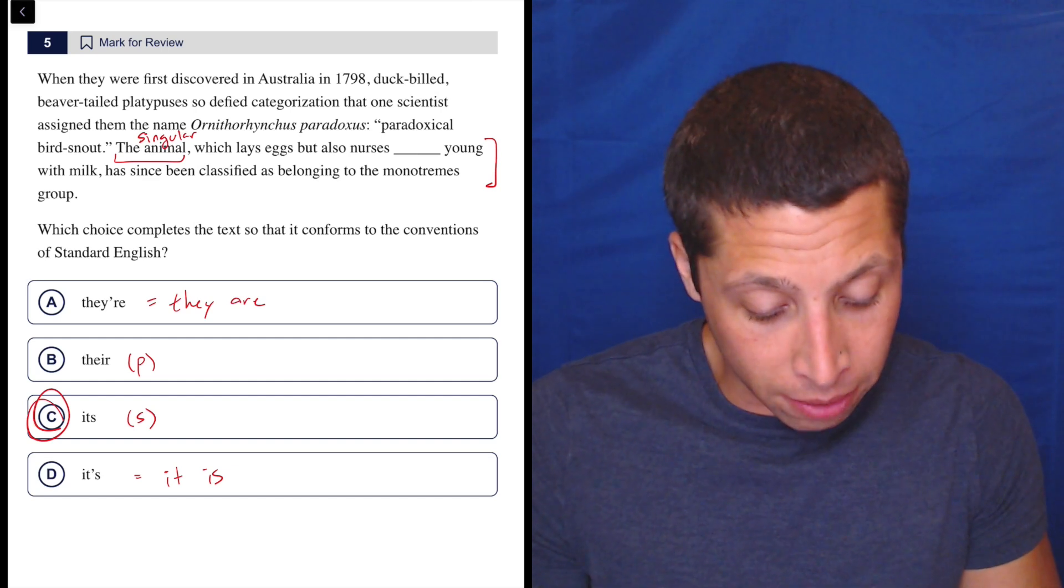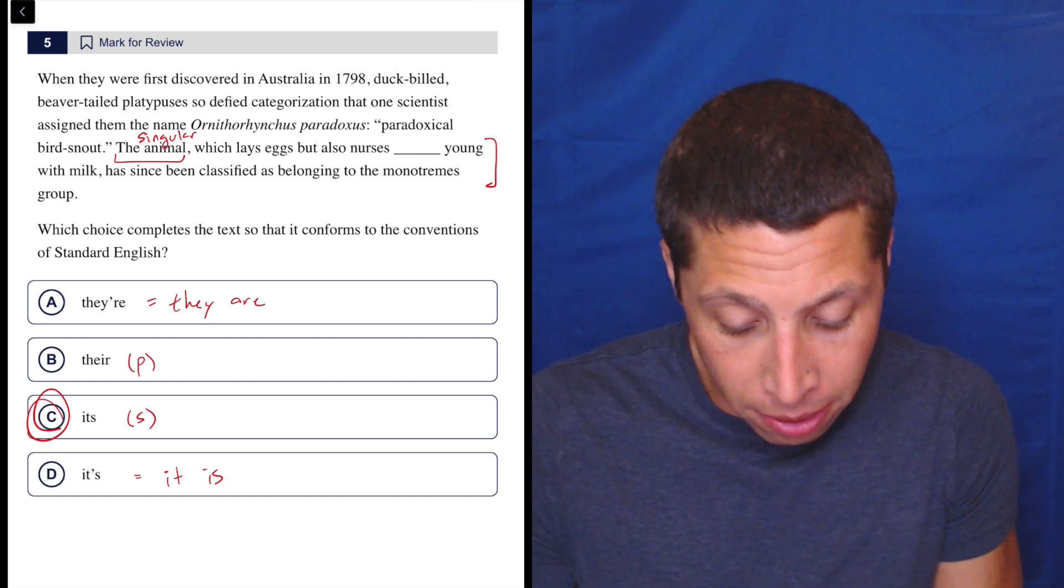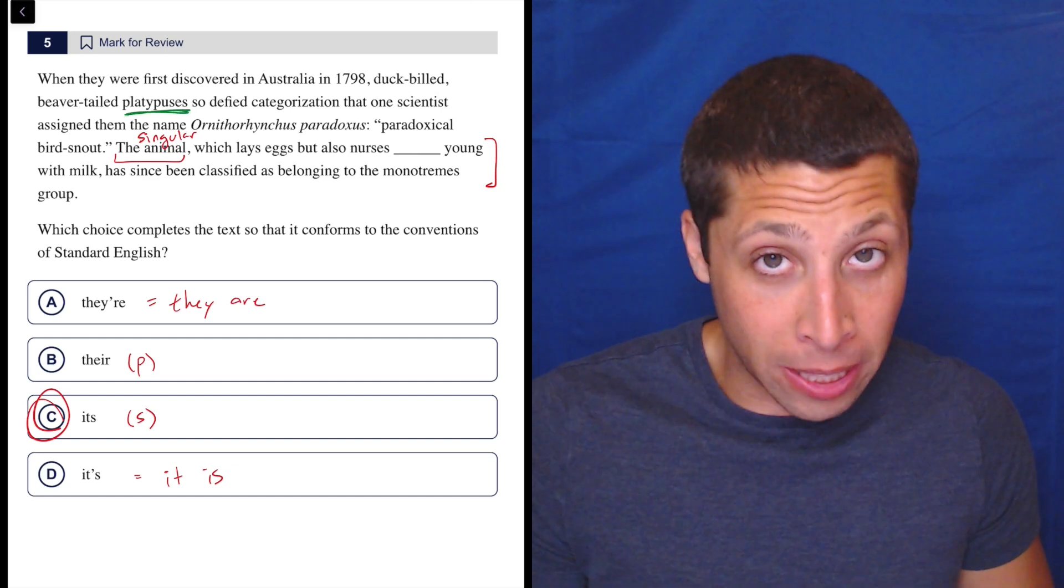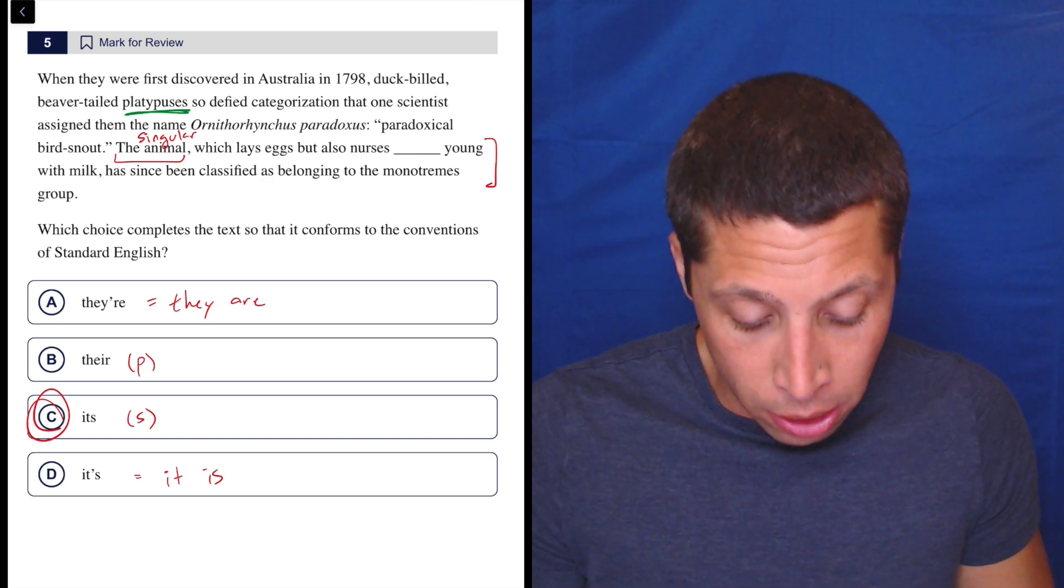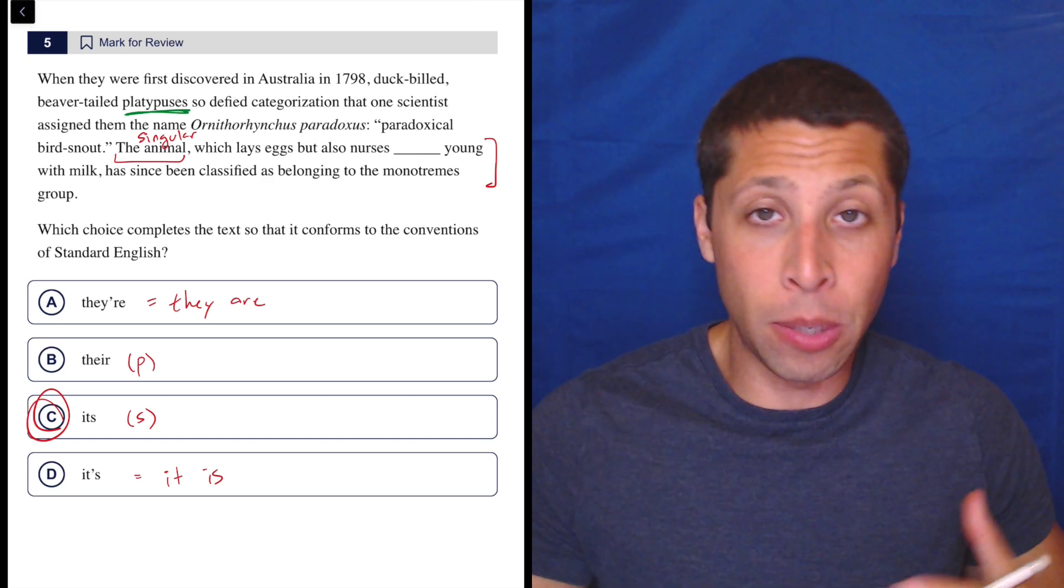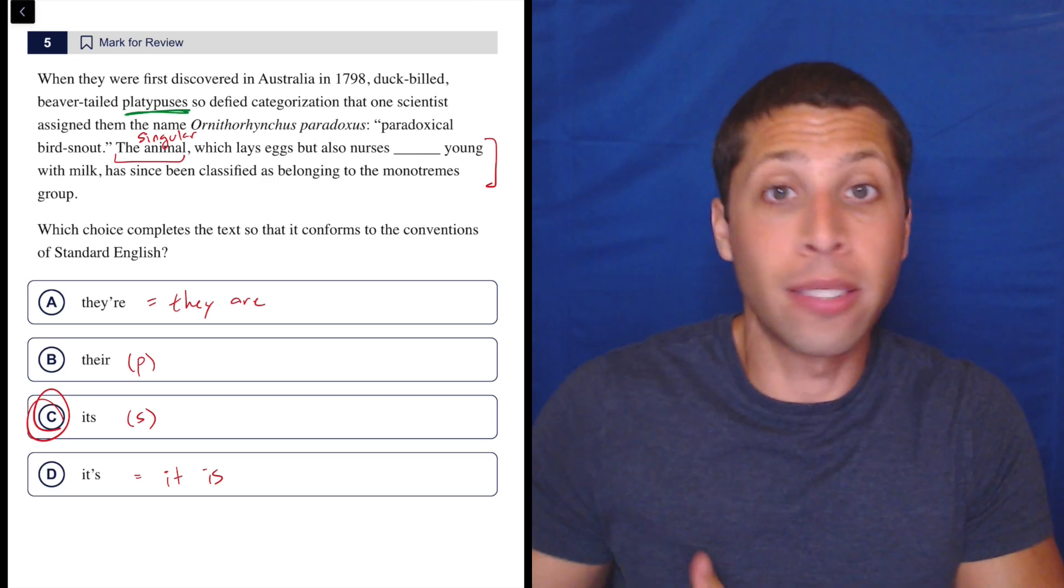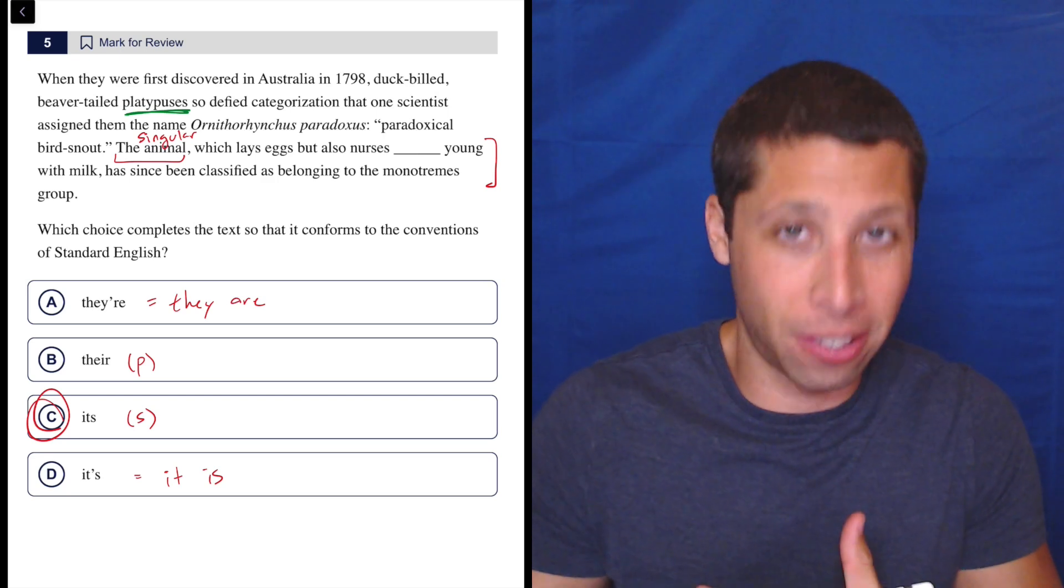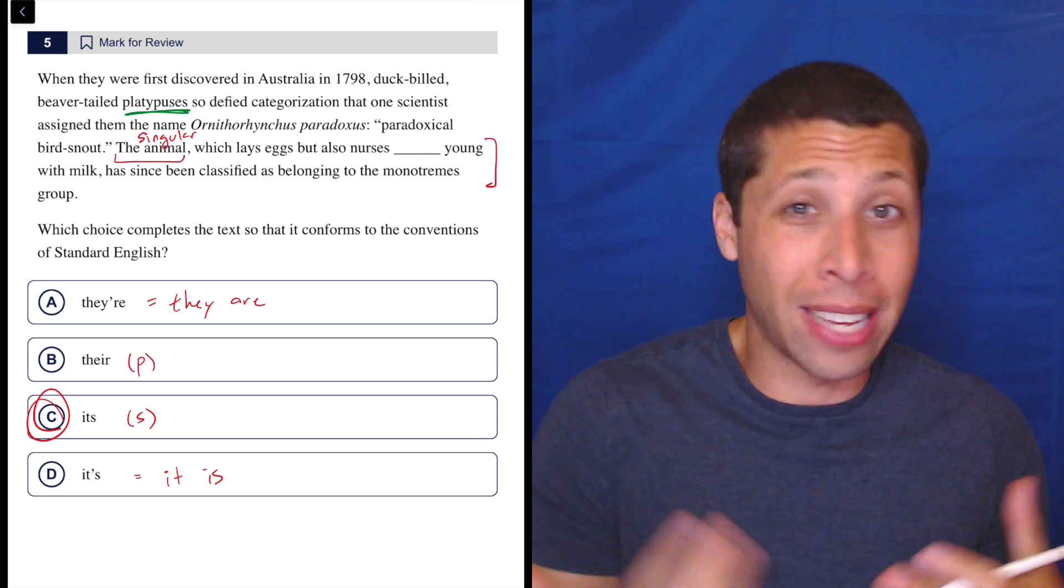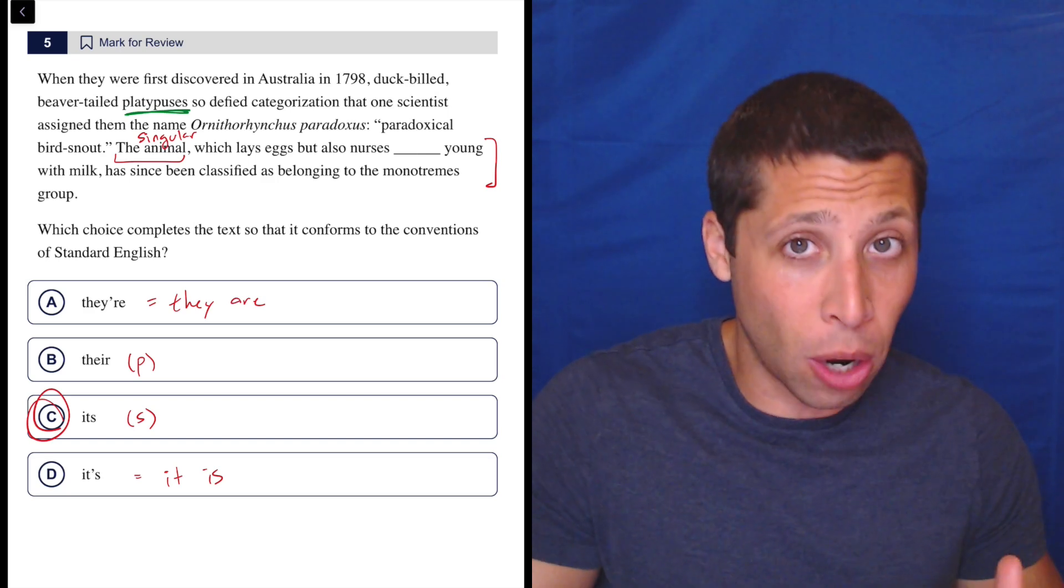Now the reason this is so frustrating is if we go back, they do talk about the animal in the plural earlier on—platypuses. So why does it switch? Well, because we stick to whatever is closest to that pronoun. So the singular classification of this thing is closer to the blank 'its' that's in the sentence. So that's what we have to go with.